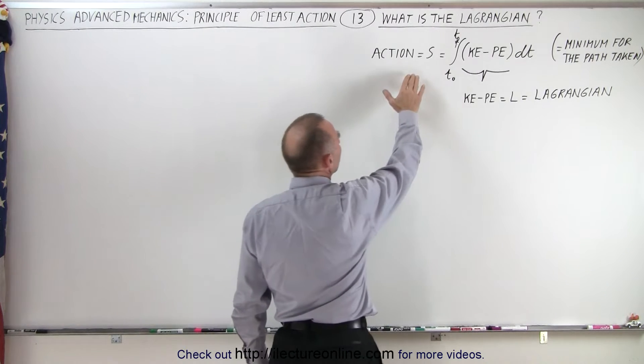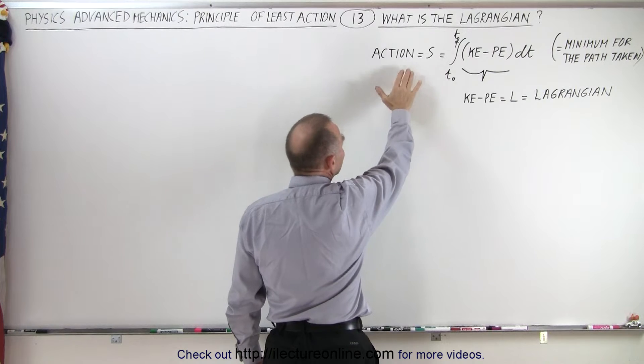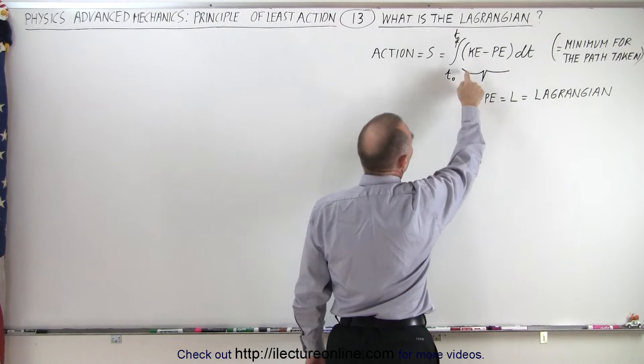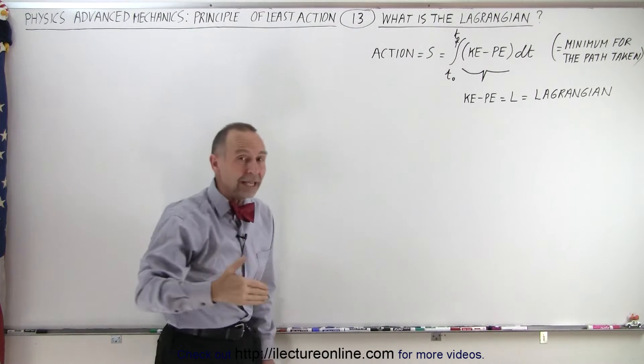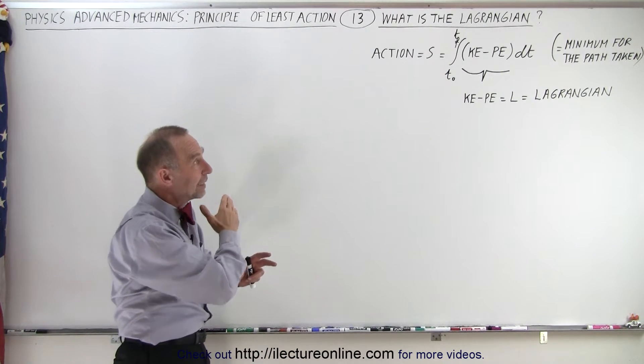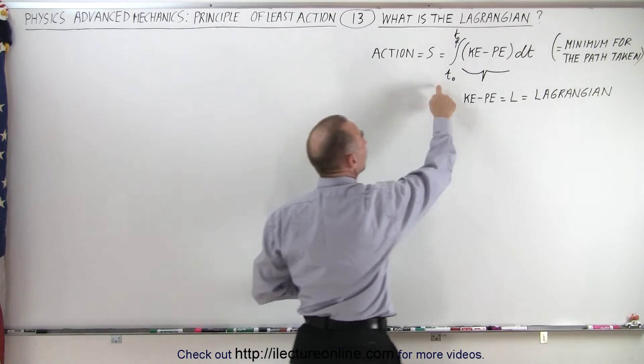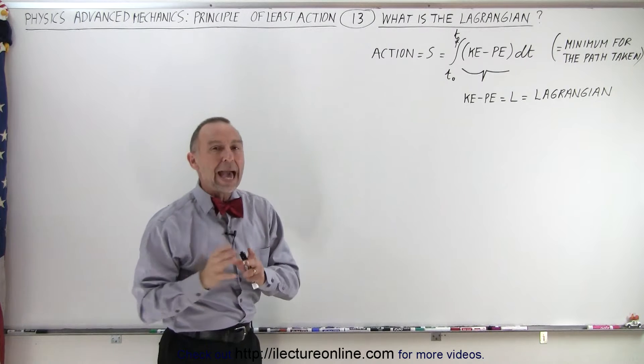let's go back to the integral that gave us the action. So we learned that the action, which is defined as the integral over time of the difference between the kinetic energy and the potential energy, each defined as a function of time, if we take that integral from the initial time to the final time, that will be a minimum for the actual path taken.